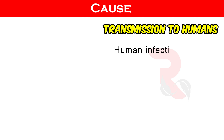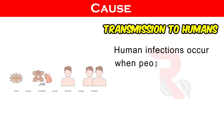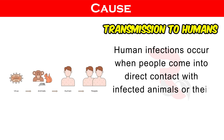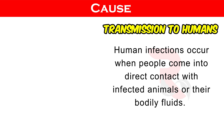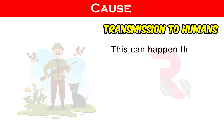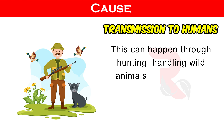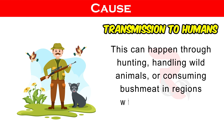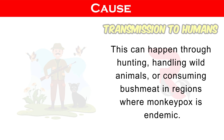Transmission to Humans: Human infections occur when people come into direct contact with infected animals or their bodily fluids. This can happen through hunting, handling wild animals, or consuming bushmeat in regions where monkeypox is endemic.